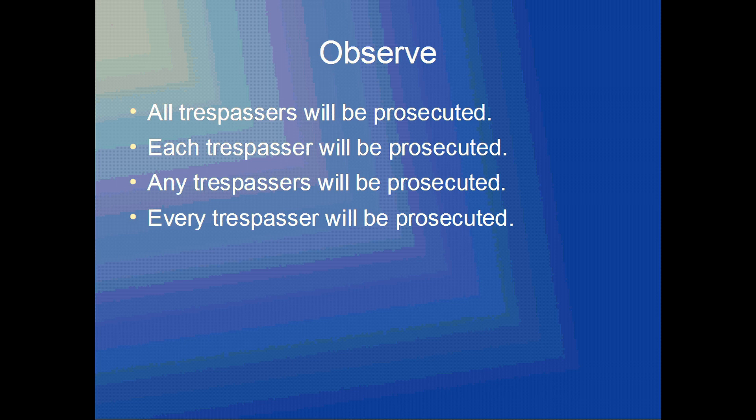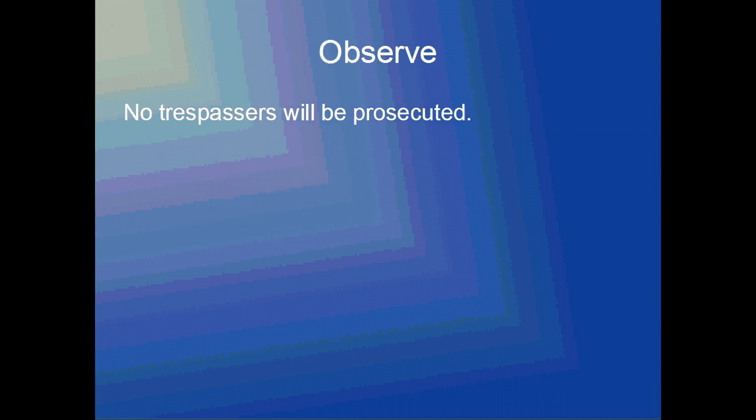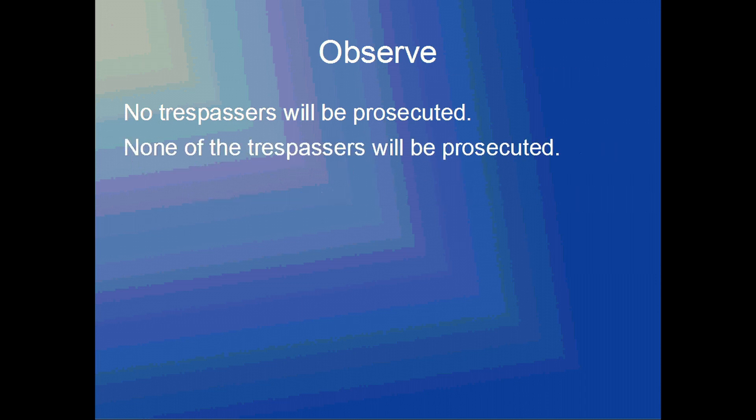The basic form for a negative universal proposition is: 'No trespassers will be prosecuted.' There are at least two ways you could express that same proposition. You could express it as 'None of the trespassers will be prosecuted,' or 'Not one trespasser will be prosecuted.'